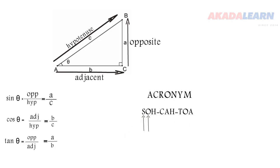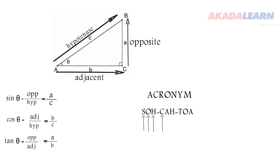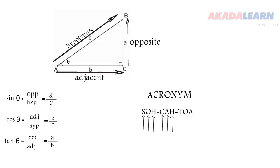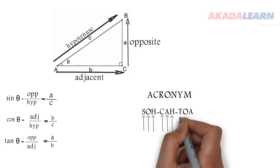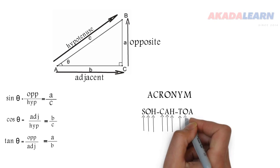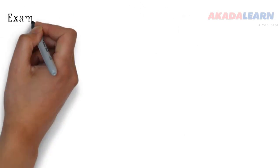Now the S there is for sine, the O there is opposite, while the H is hypotenuse. The C there is for cos, the A is for adjacent, and the H is hypotenuse. Now the T there is for tan, the O is opposite, and the A is adjacent. So remembering this acronym will help you to remember each of the ratios. So let's see an example now.